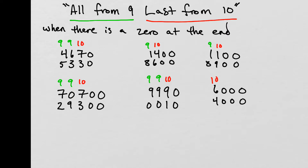Keep in mind that this formula is a very quick way to find complement numbers, and we will be coming back to 'all from 9, last from 10' later on when we do subtraction, multiplication, and division. There are many uses for it in other arithmetic procedures.